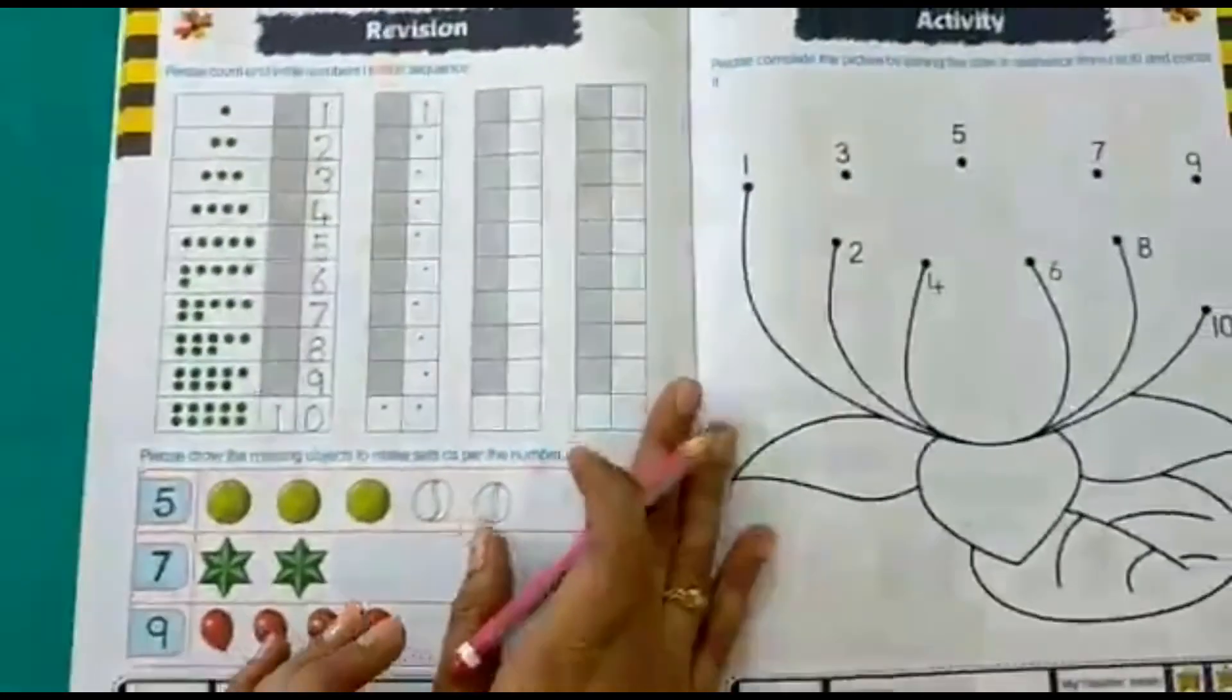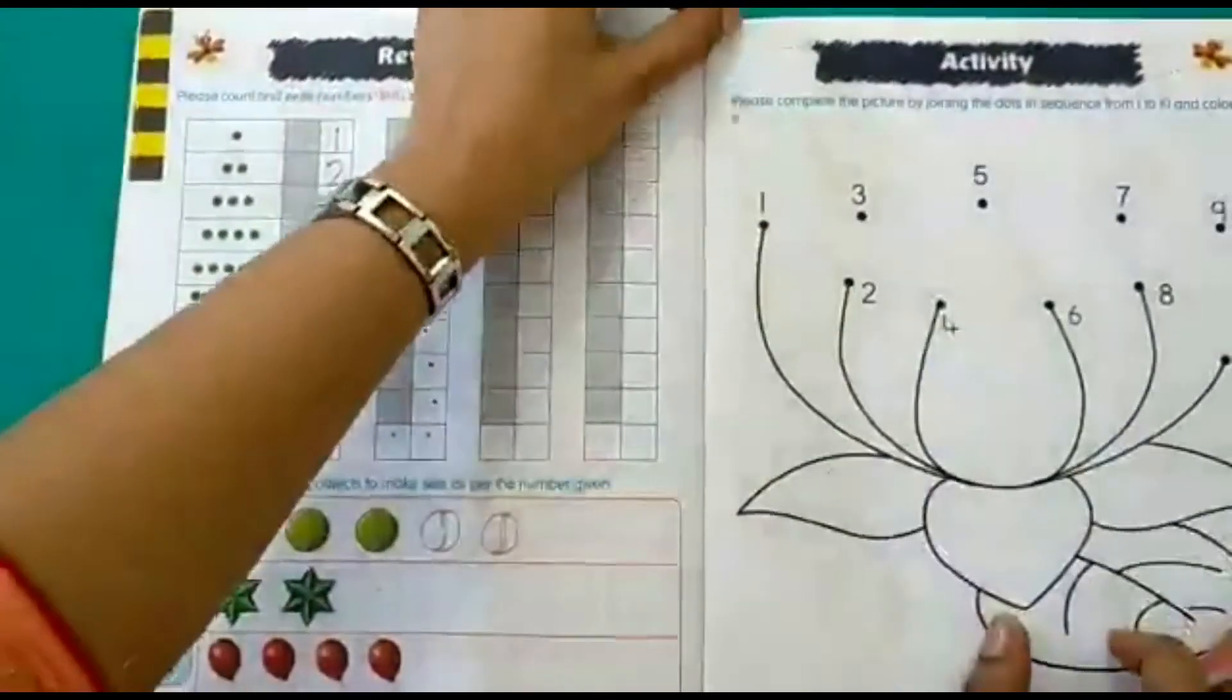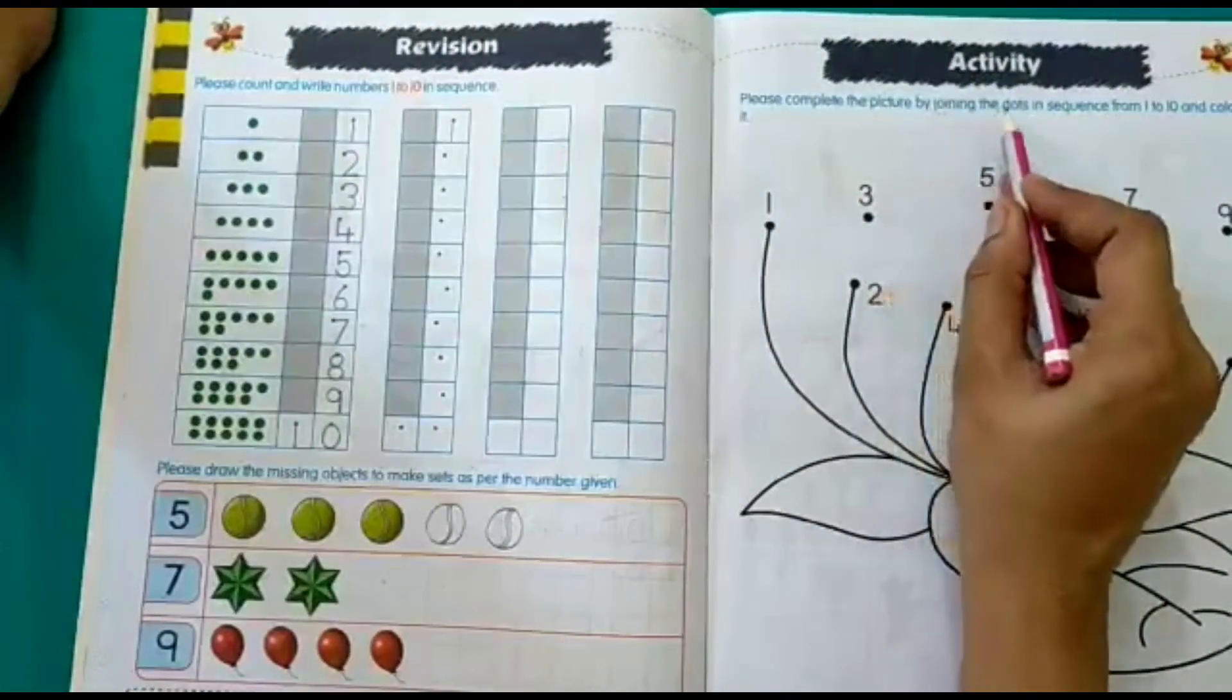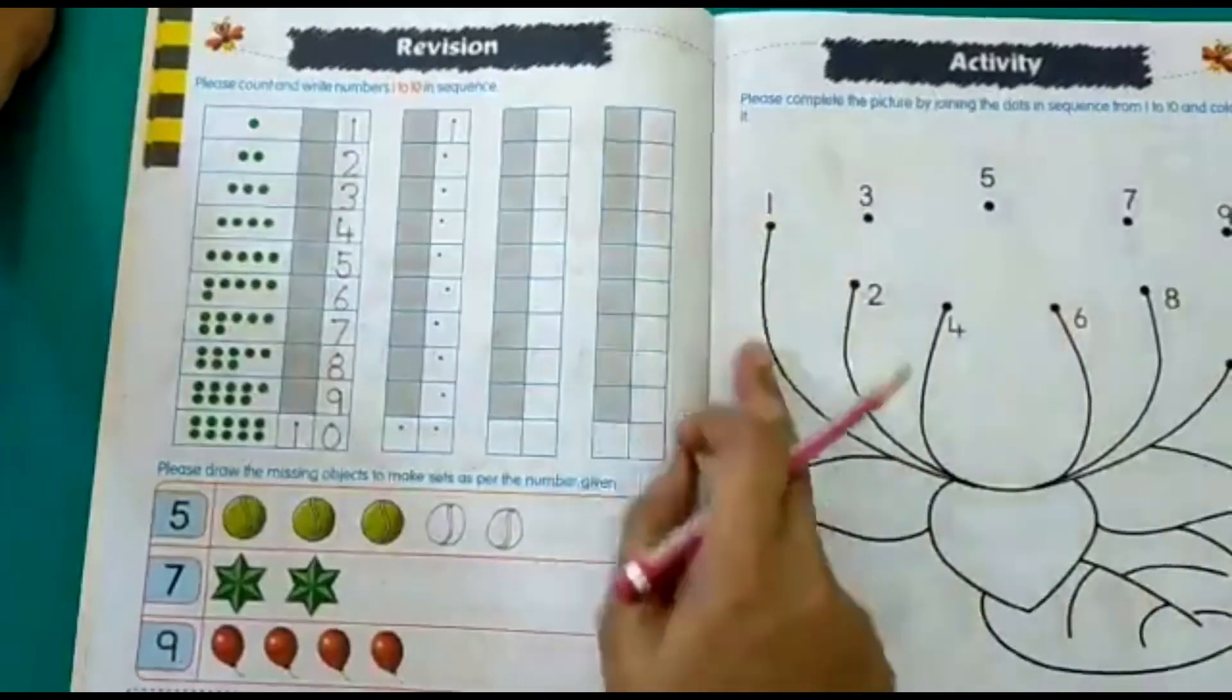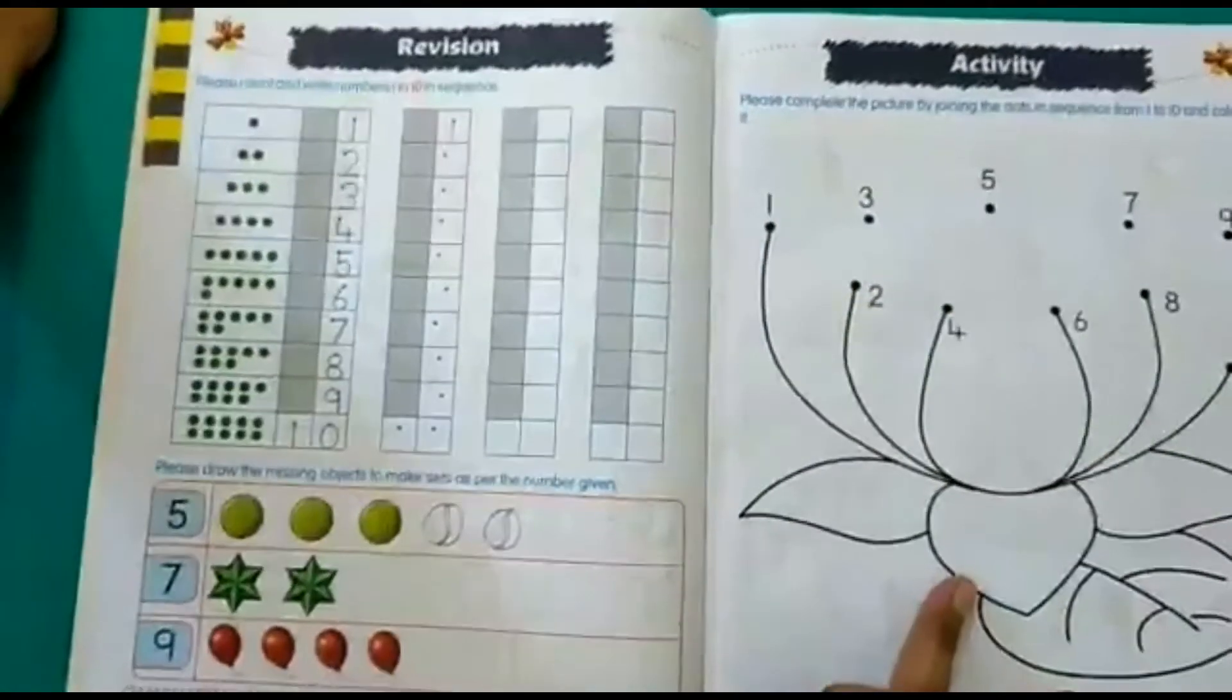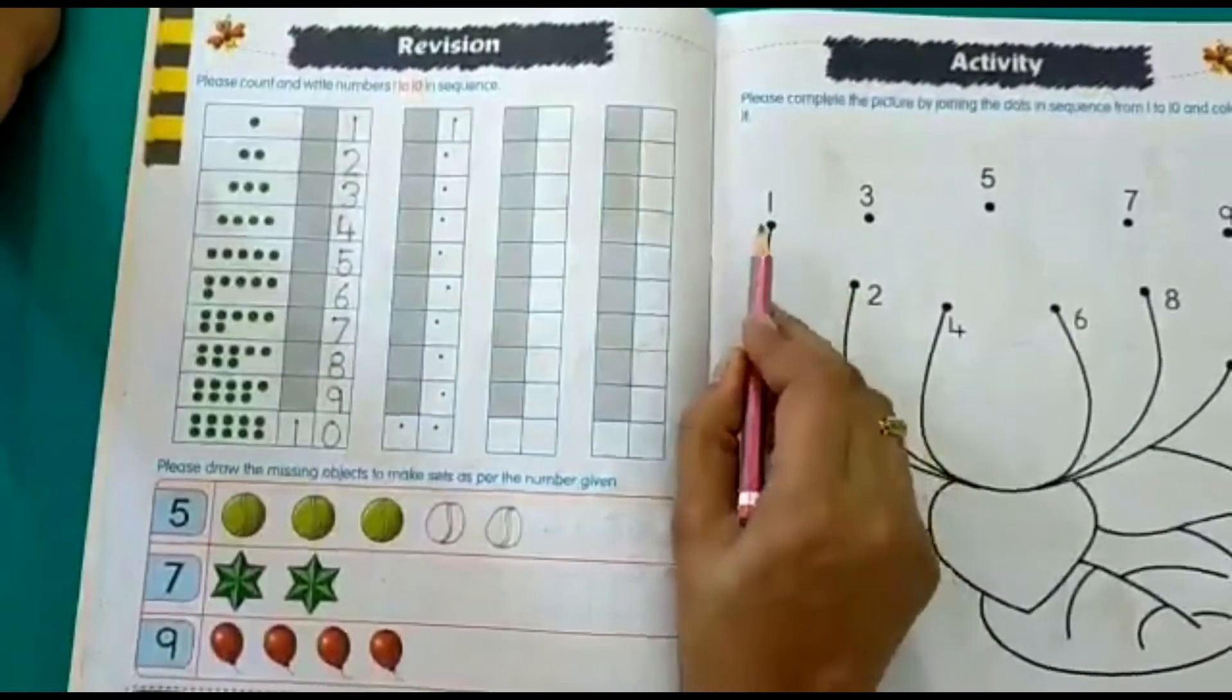The next activity that we have to do is on page number 33. This is fun children. You have to complete the picture by joining the dots in sequence from 1 to 10 and colour it. As you can see, there is a picture which is drawn here. But it is not complete. So you have to join the dots in the sequence.